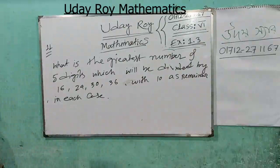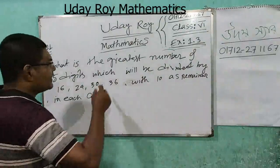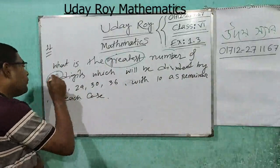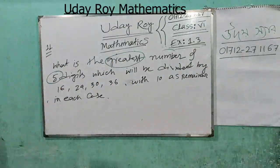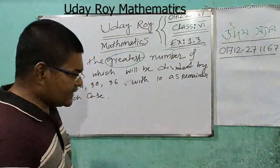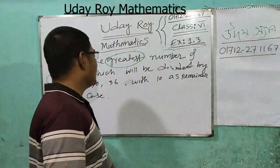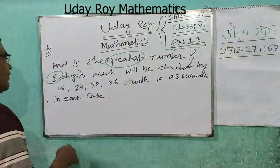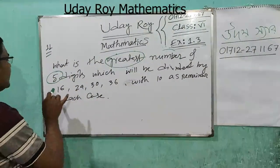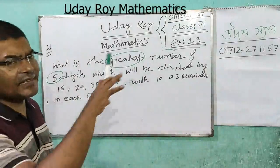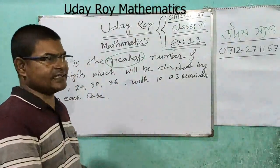It is a greatest number of 5 digits. In this type of problem, always find out the LCM first. Find out the LCM of 16, 24, 30, and 36.